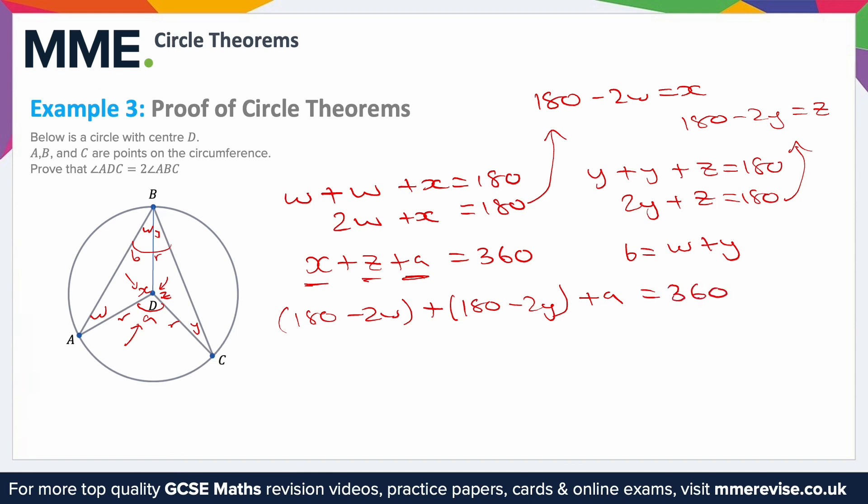So there's quite a bit of tidying up here. However, 180 plus 180, so we'll get 360, and then take away 2y, take away 2w—not a lot we can do with that, so let's just leave that like that for now. And then plus a is equal to 360. Things will start canceling out now because you can see we've got 360 on this side, 360 on this side, so those cancel each other out, which leaves us with minus 2w minus 2y plus a equals 0.